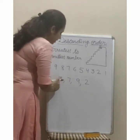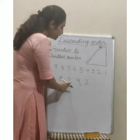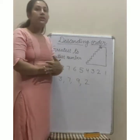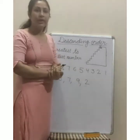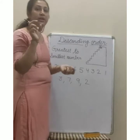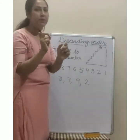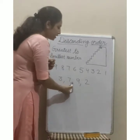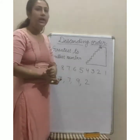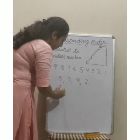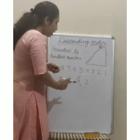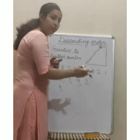देखो, आपका first number क्या है? 3, फिर next क्या है? 7, फिर 9, और फिर 2। आपने इसको descending order में arrange करना है। How to solve it? अब आप observe करेंगे which number is greater। सबसे पहले बड़ा number बताना है। 3, 7, 9 और 2 में से greater number कौन सा है? 9। तो 9 यहाँ पर write करना है firstly। Tick लगाओ। How many numbers are left? 3 numbers are left — 3, 7 और 2।